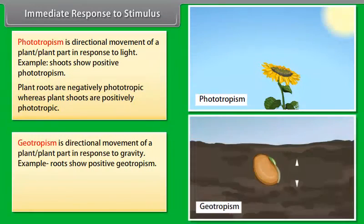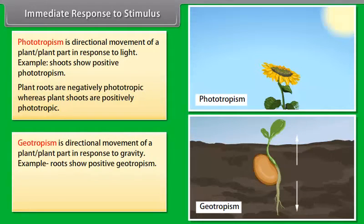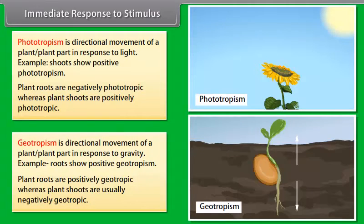Geotropism is the directional movement of a plant or plant part in response to gravity. For example, roots show positive geotropism. Plant roots are positively geotropic whereas plant shoots are usually negatively geotropic.